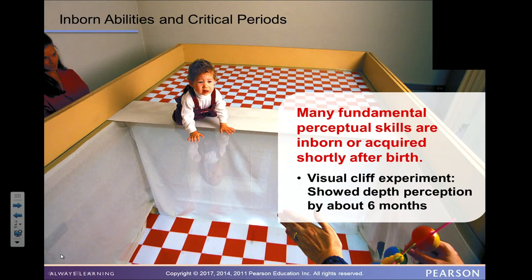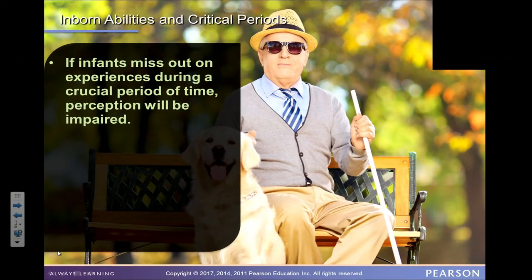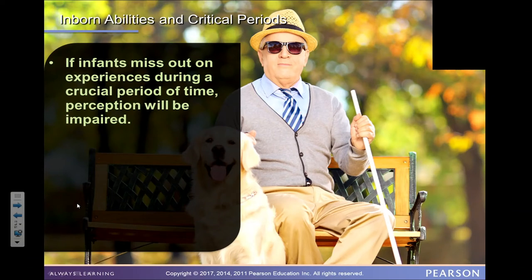That shows the baby has depth perception — their visual development can perceive depth. If infants miss out on experiences during a crucial period of time, perception will be impaired. Infants have to be exposed to the world — its dangers as well as the safety measures that protect them — to become familiar with it. If they're not exposed, it's a critical period that will cause them to be unable to function in the world as we're supposed to function as adults.